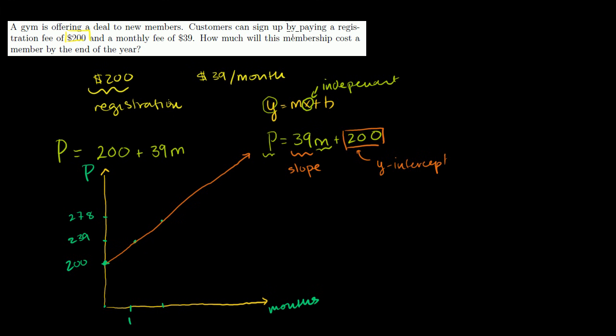And so they say, how much will a membership cost by the end of the year, 12 months? So we would have to go 2, 3, all the way out to 12 months, which might be here. So our graph is going to be out here someplace. But we could just figure it out algebraically. At the end of the year, m will be equal to 12. When m is equal to 12, how much is our membership? The price of our membership is going to be our $200 membership fee plus 39 times the number of months, times 12.